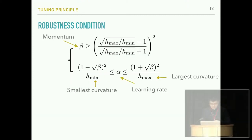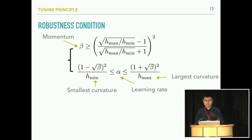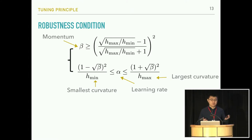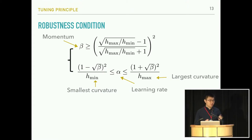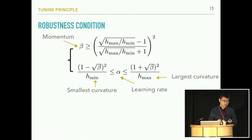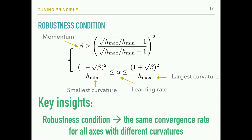The question is: under what condition can we achieve this same convergence rate along different directions? Our analysis shows we need to satisfy the following robustness condition. Given the largest curvature and the smallest curvature in the quadratic function, we need to make sure the momentum value is large enough, and we need to make sure the learning rate is within a specific range. To summarize: if we want to achieve the same convergence rate for all axes with different curvatures, we need to satisfy this robustness condition, and if we properly set the learning rate and momentum, we achieve better convergence rate than gradient descent without momentum.